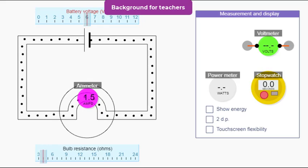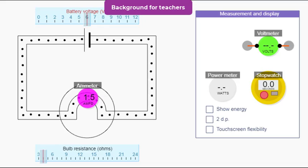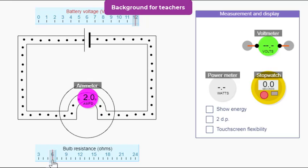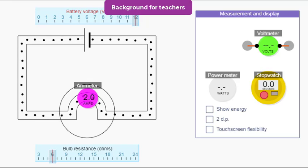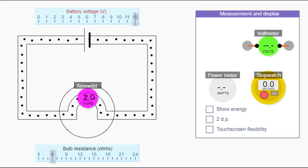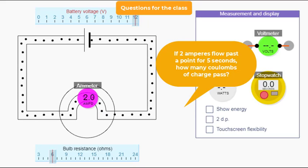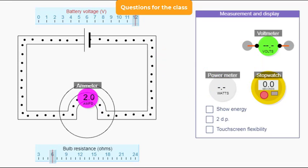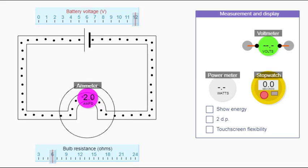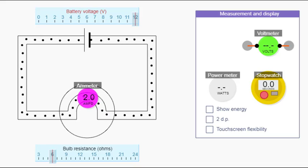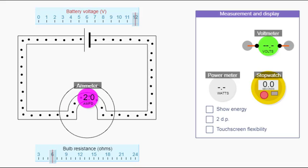We're going to choose a current of two amperes flowing past a point for five seconds. For two amperes I'm going to choose V equals 12 volts and R equals 6 ohms. If two amperes flow past a point for five seconds, two amperes is two coulombs of charge passing a point each second, so in five seconds two times five equals ten coulombs of charge must pass that point.